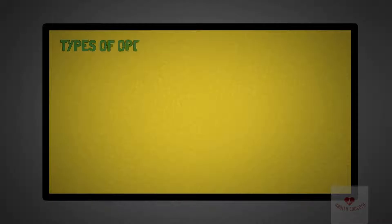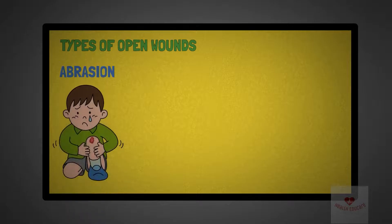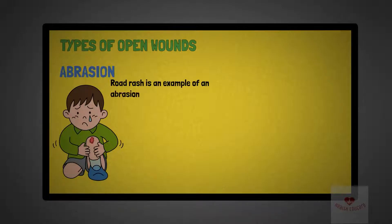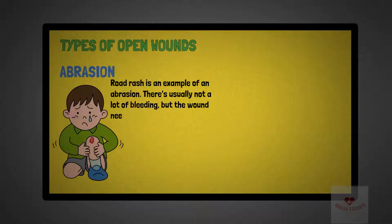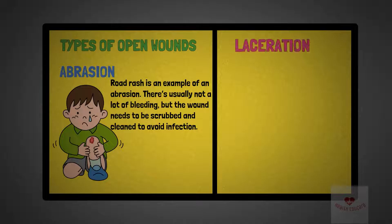There are four types of open wounds, which are classified depending on their cause. Abrasion: an abrasion occurs when your skin rubs or scrapes against a rough or hard surface. Road rash is an example of an abrasion. There's usually not a lot of bleeding, but the wound needs to be scrubbed and cleaned to avoid infection.